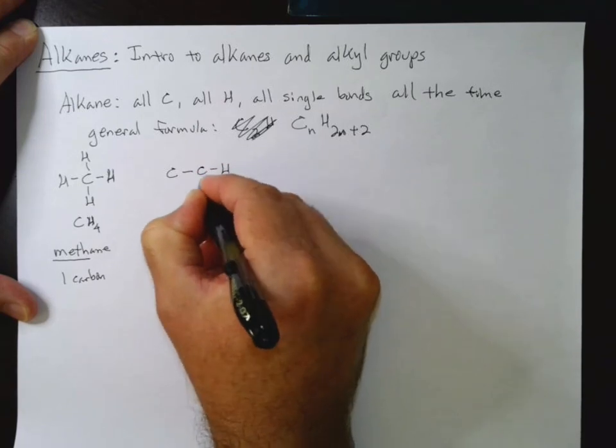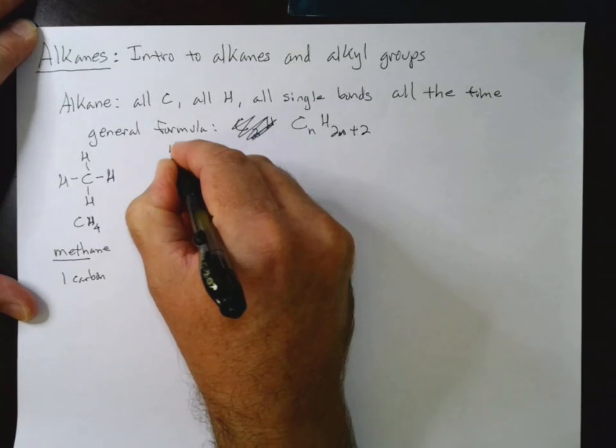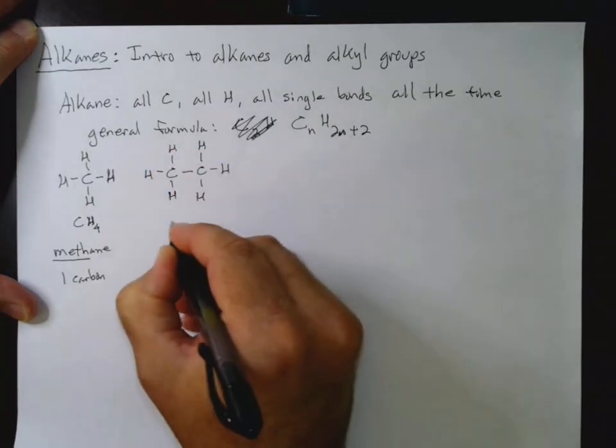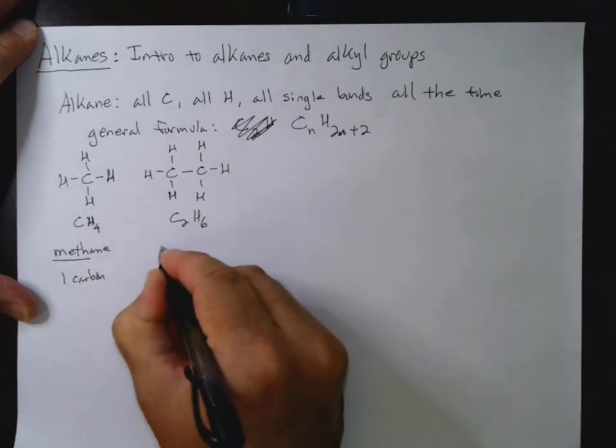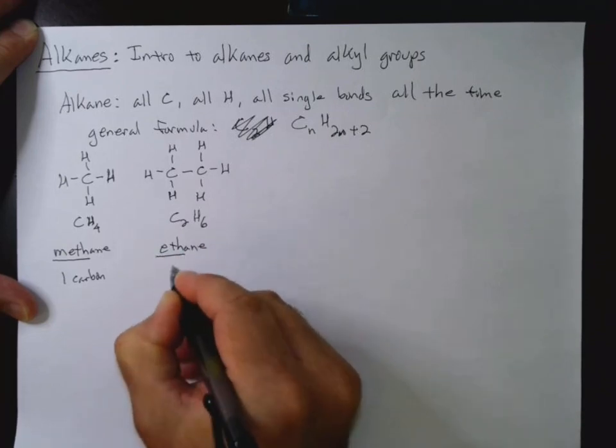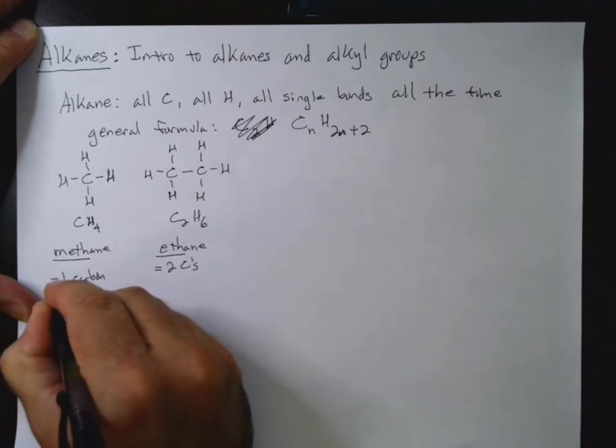If we have 2 carbons, we will end up with C2H6, which is ethane. And so eth equals 2 carbons.